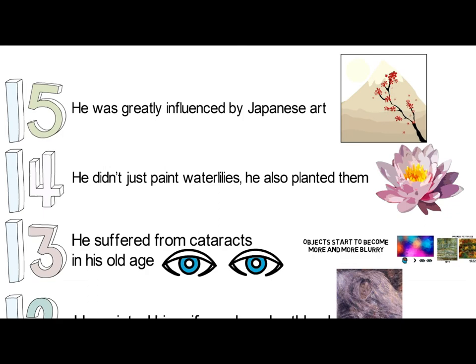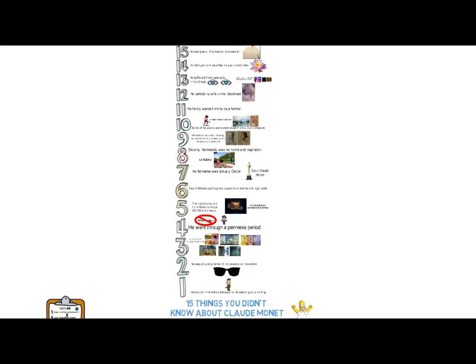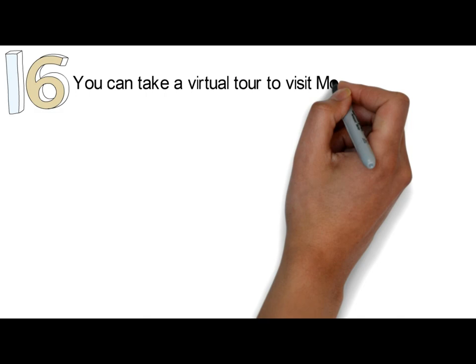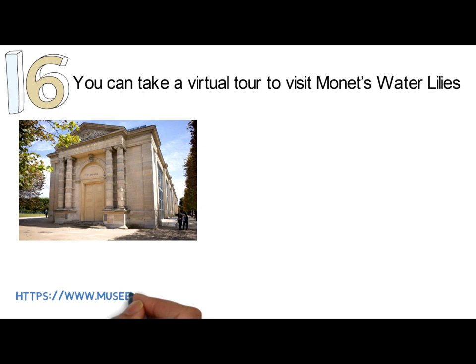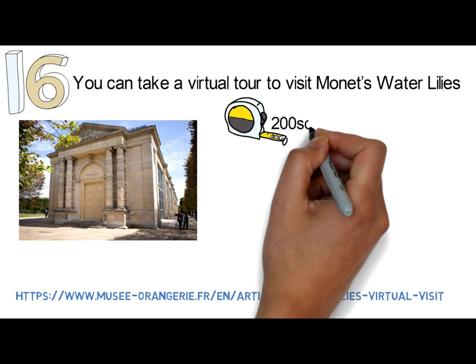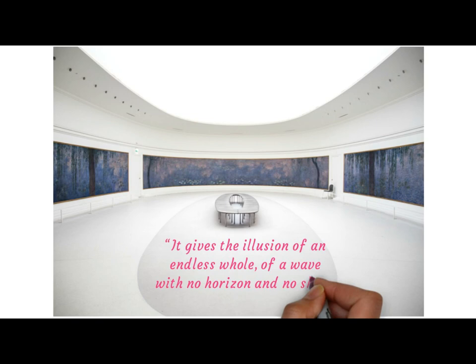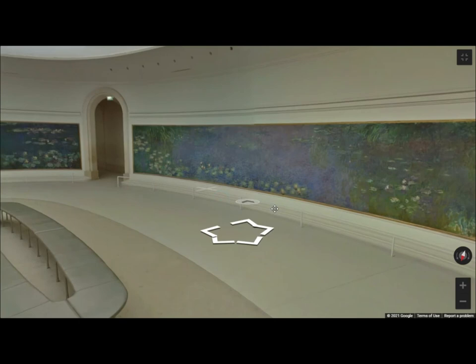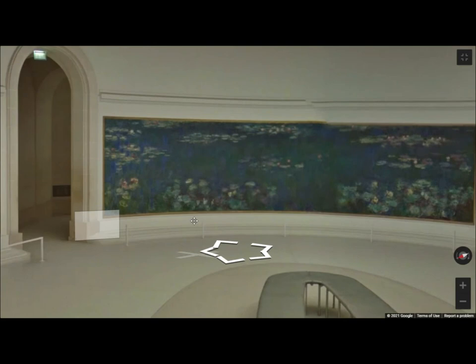Are you a fan of Claude Monet? Do you have a particular favorite of his works? As a bonus, you can take a virtual tour to visit Monet's Water Lilies at the Musée de l'Orangerie. The painting covers 200 square meters of canvas which surrounds and envelops the viewer — as Monet said, it gives the illusion of an endless whole, of a wave with no horizon and no shore. This water lily series was the last great work of Monet, on which he spent three decades painting from the 1890s to 1926 until his death. It is a legacy of Monet, painted after the death of his wife and his son.